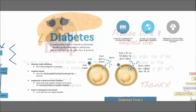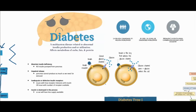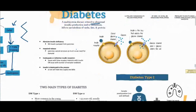Really, diabetes is a disease of metabolism. It's an inability to metabolize carbs, fats, and proteins. It's a problem with the way insulin is produced or used, and there are different ways that those problems can come about.